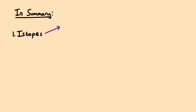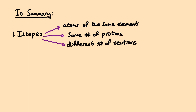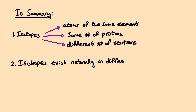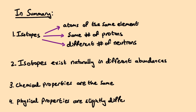In summary, there are four key points to remember. Number one: the definition of an isotope — atoms of the same element that have the same number of protons and a different number of neutrons. Number two: isotopes exist naturally in different abundances. Number three: the chemical properties of isotopes are the same. And finally, number four: the physical properties are slightly different.